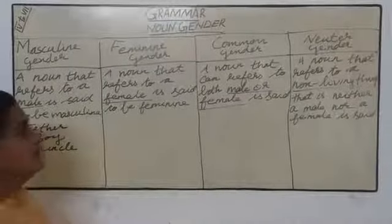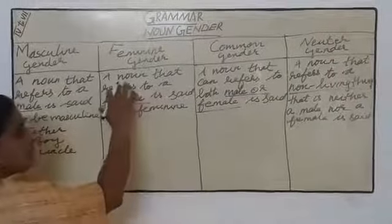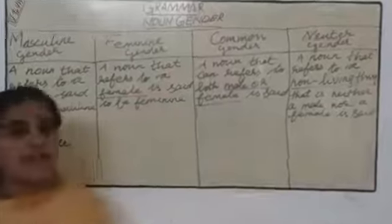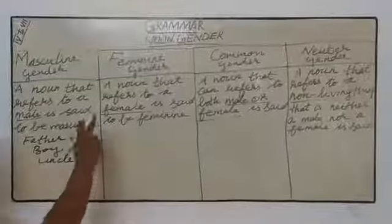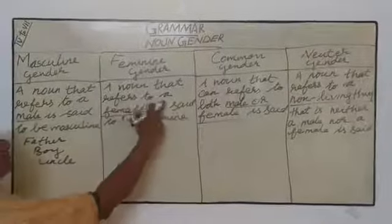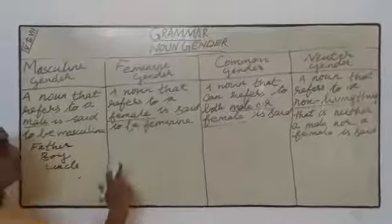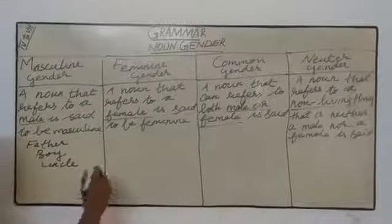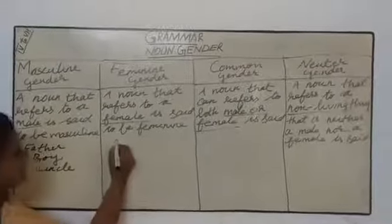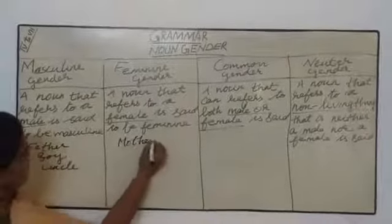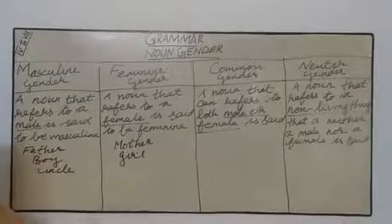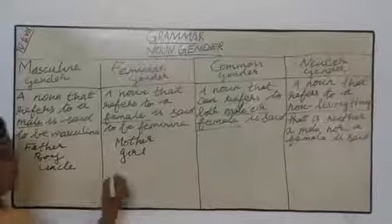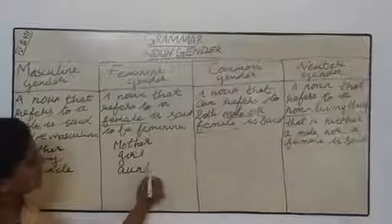Feminine gender noun — these are the names of nouns that refer to a female; they are said to be feminine gender nouns. Examples include: mother, girl, and aunt — spelled A-U-N-T.